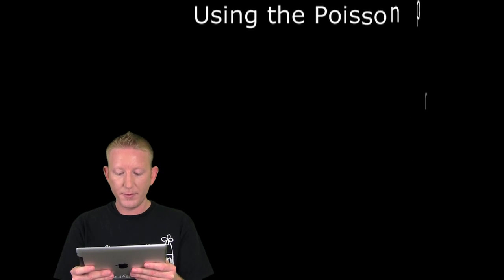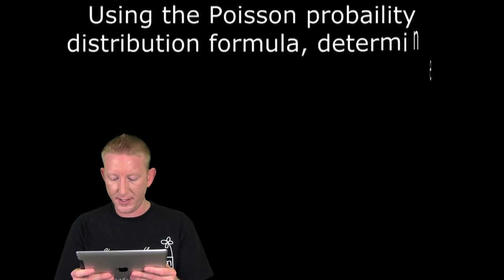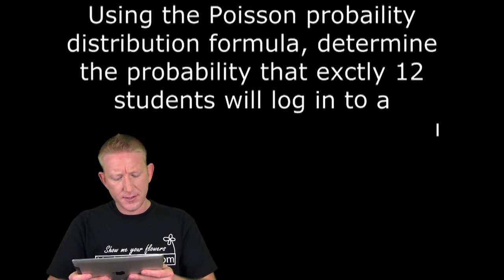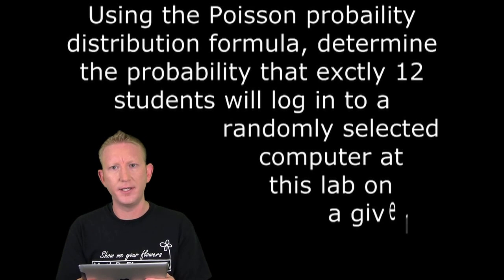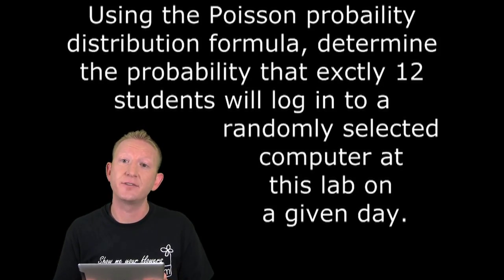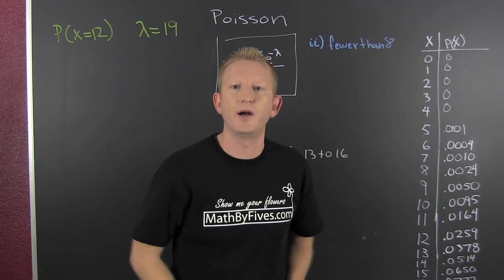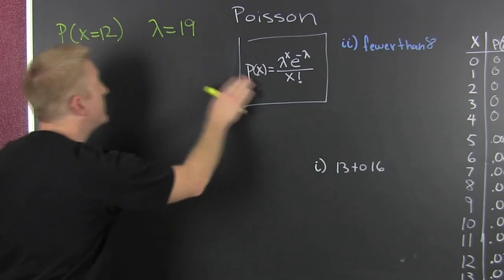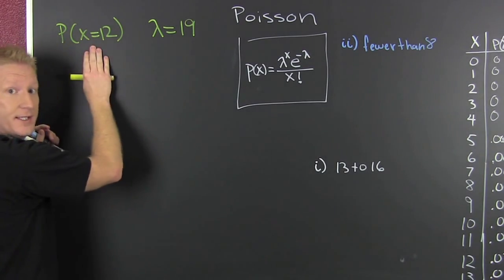Using the Poisson probability distribution formula — so they want us to use the formula — determine the probability that exactly 12 students will log into this randomly selected computer lab in a given day. What they want us to do is use the formula to find the probability that exactly 12 people log into that computer.